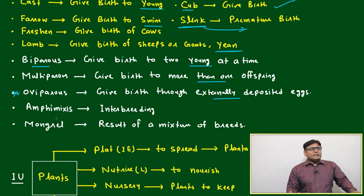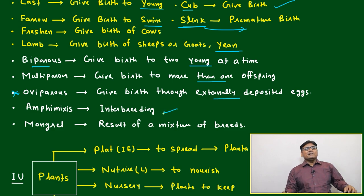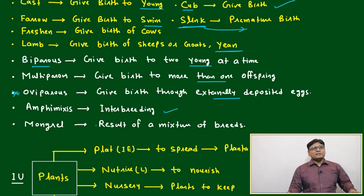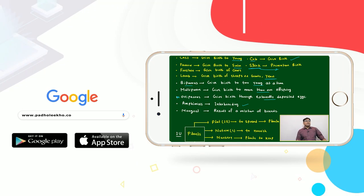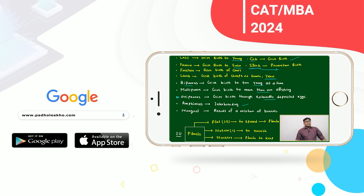'Amphimixis' means interbreeding — when breeding is done among different species, it is called amphimixis. 'Mongrel' means the result of a mixture of breeds.